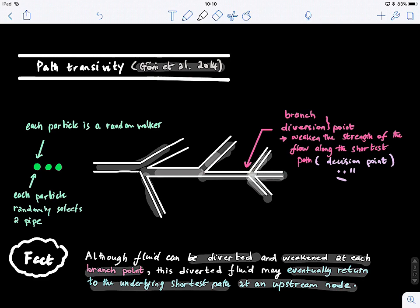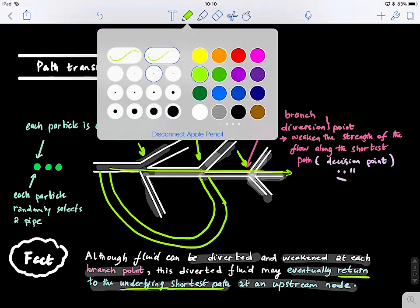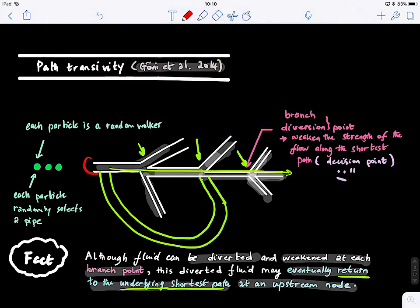Imagine here — this is a branching. The search information looks only at branches, but what if these branches connect back? So you have a return to the underlying shortest path. Let's say the shortest path is this one, going from node A to node B.